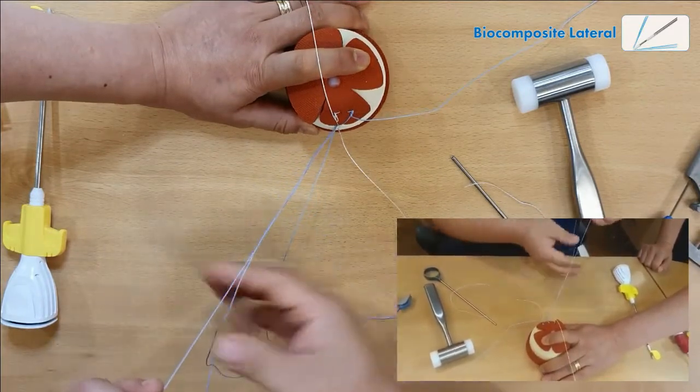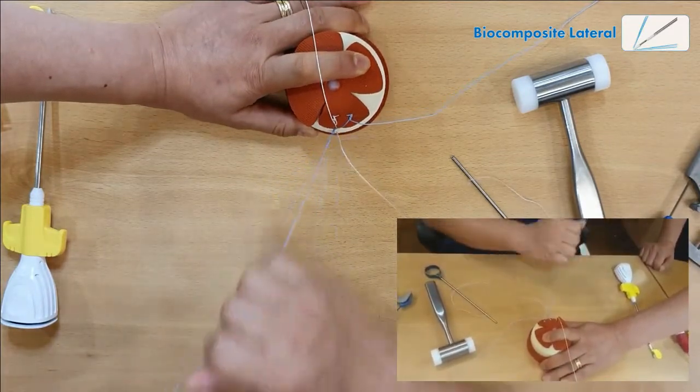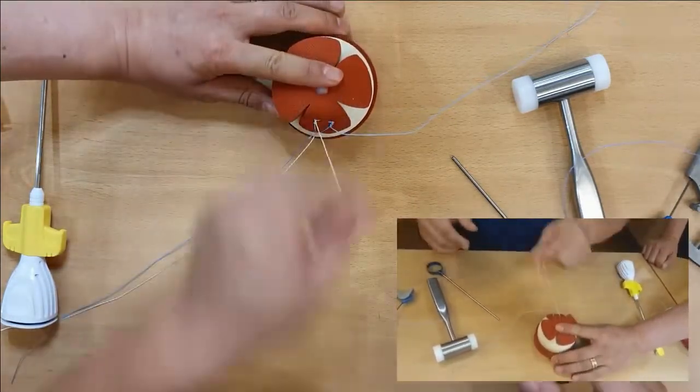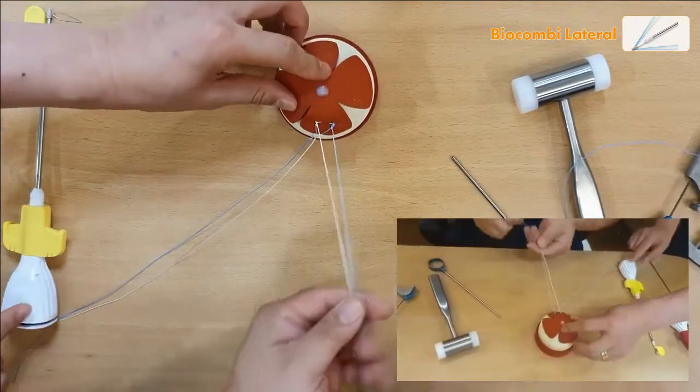I'm going to remove the fiber wire from the lateral anchor. I can cut this. I'm just going to show you the other half.